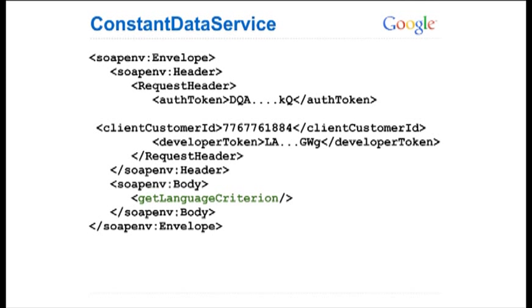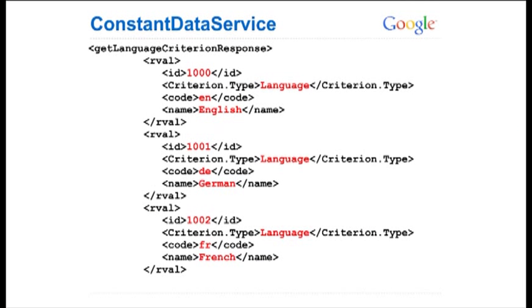Let's look at the Constant Data Service, which returns data on various constants. Right now it has two methods, one of which is get language criterion, and that returns an array of all the different possible language criteria you might want to target. Here's a snippet of the response: English language target ID 1000, German ID 1001, French 1002, etc. You can use this instead of hard coding languages and IDs into your application, and you have the option of pulling up-to-date data that matches exactly what we have in AdWords using the service.